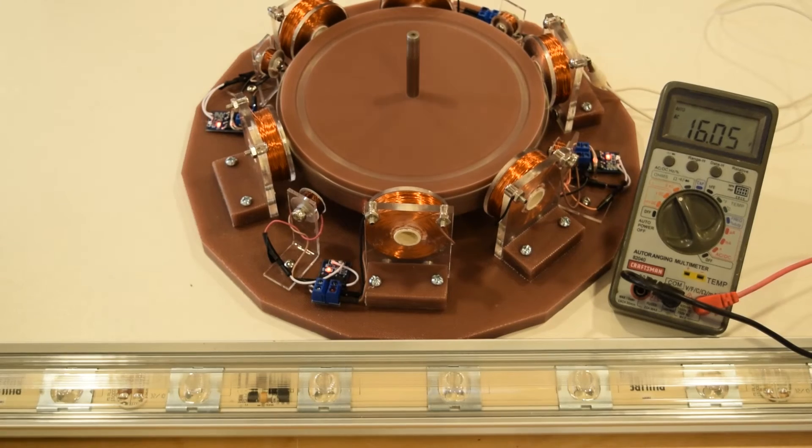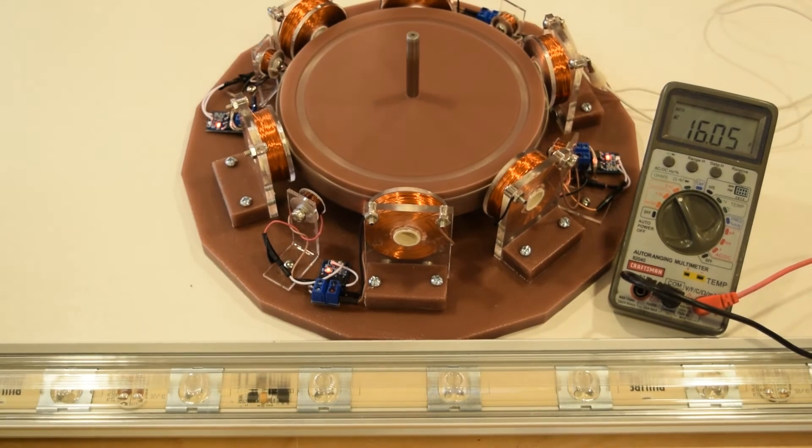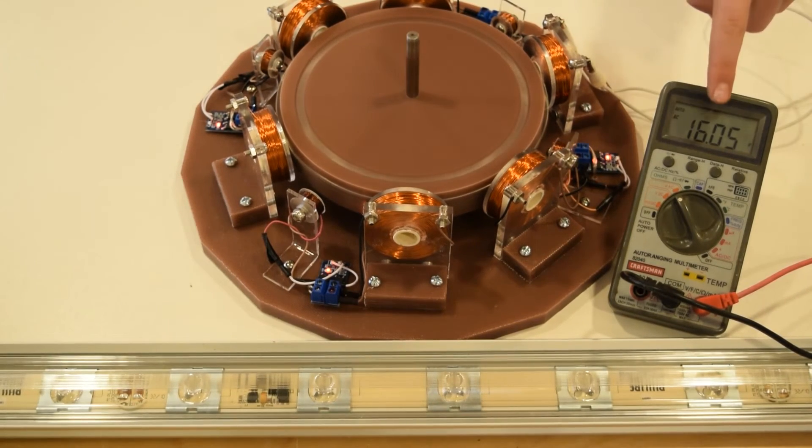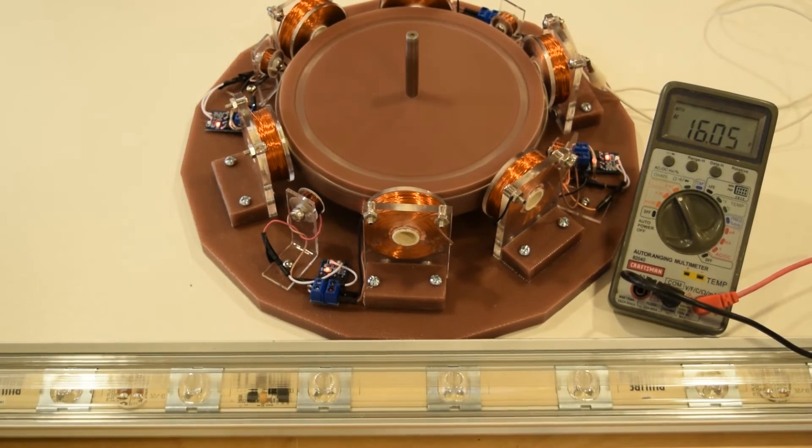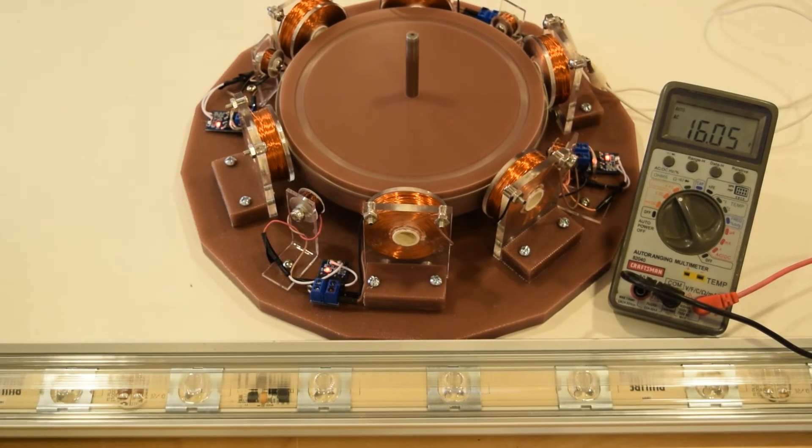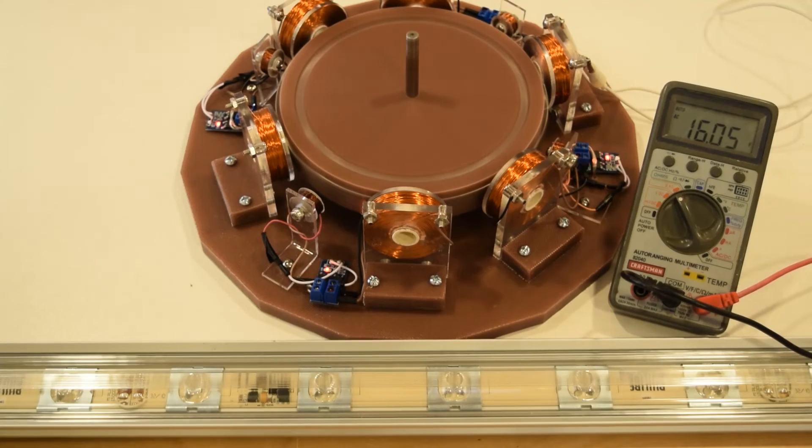The generating coils induce about 15 volts AC, but Lenz's law applies here. The greater the power draws out of the coil, the greater the energy required for the rotor shaft. Now we will light up 20 LEDs.